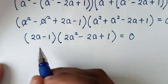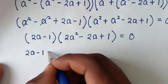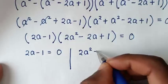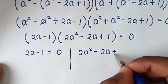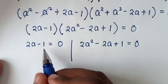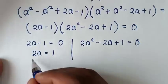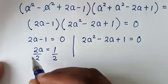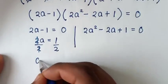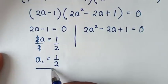To solve from here, we have two solutions. The first solution is 2a minus 1 equals 0, so 2a equals 1, and dividing both sides by 2 gives a₁ equals 1/2. This is the real solution.